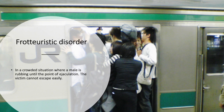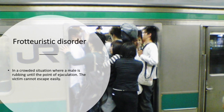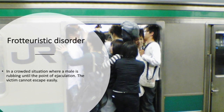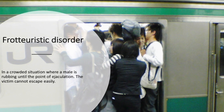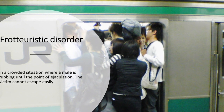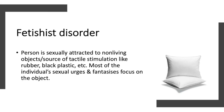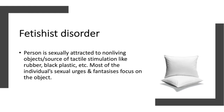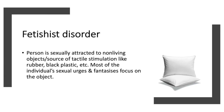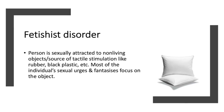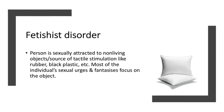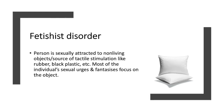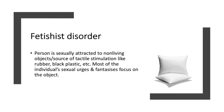Frotteuristic disorder occurs when, in a crowded situation, a male rubs on another individual to the point of ejaculation. The victim cannot escape easily because of the crowded situation. Fetishistic disorder is whereby an individual is sexually attracted to non-living objects or sources of tactile stimulation like rubber or black plastic, with most sexual urges and fantasies focusing on these objects.